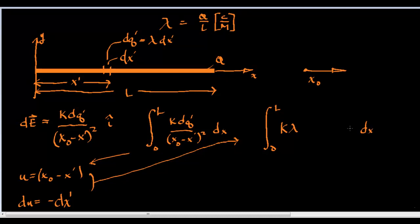Zero to l of k lambda, and I'm going to pull the dx out to the front, or towards the end, I guess, dx prime. And now, we'll plug in x minus x prime, or u.